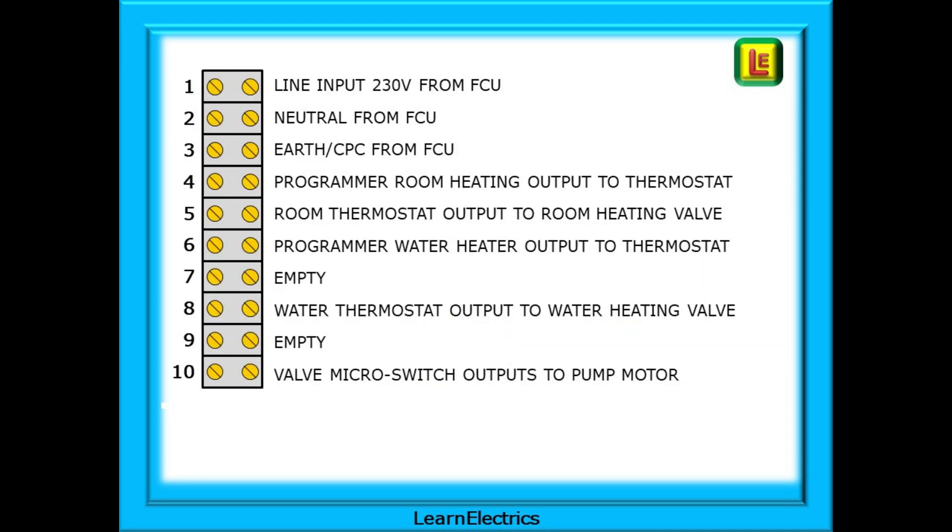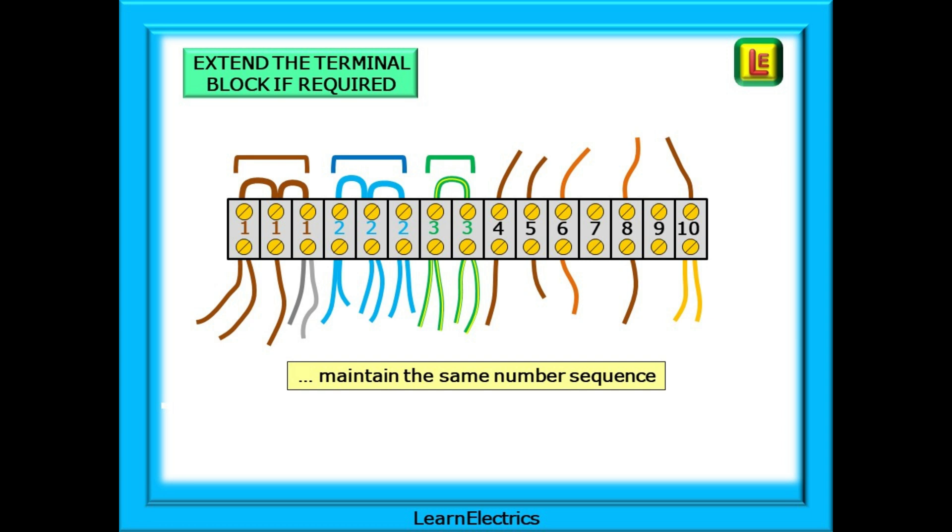Just to finish off, here are the terminal block connections and their functions as used in this video. These connections are a guide. Always check the actual wiring diagram for the system that you are working on as every manufacturer has their own way of doing things. And if you need to extend the terminal block it is always a good idea to keep the number sequence in order. It makes wiring up and maintenance so much easier.